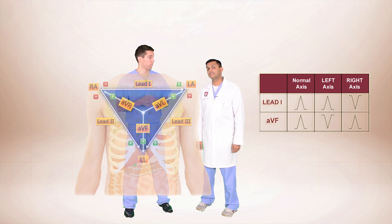That's pretty good, Mark. Let me make it a little bit more challenging for you. So what if the lead is negative in lead 1 and positive in AVF? That would mean that our axis is somewhere in this quadrant. We would call that right axis deviation.